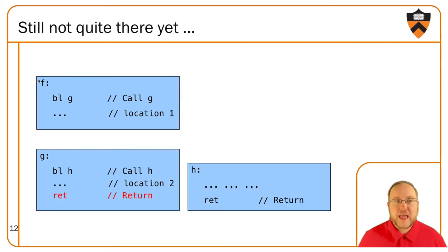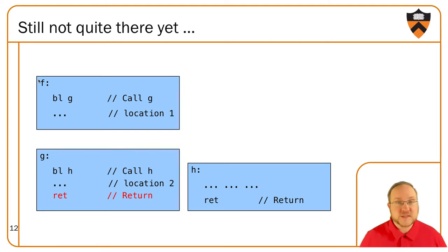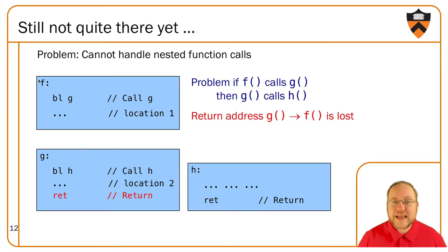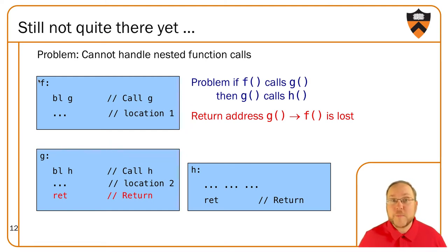Here's a more complicated example: F calls G and G calls H. When F calls G, location 1 is put into X30. Now when G calls H, location 2 — the location in G that H should return back to — is put into X30. We finish H and return to location 2 correctly. But now when G finishes, we return to the location stored in X30, which is still location 2, inside G. What happened to location 1 in F? G now doesn't know where to return to.